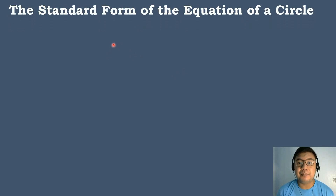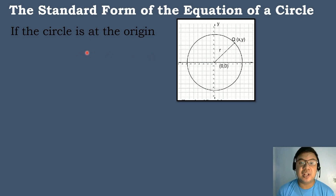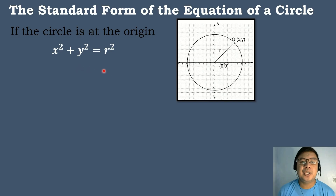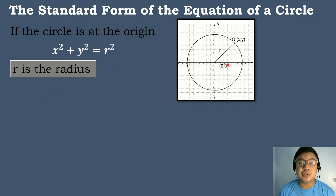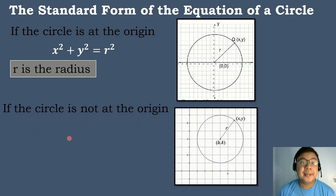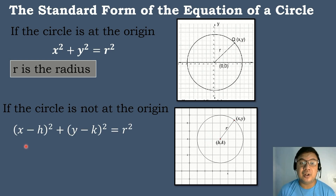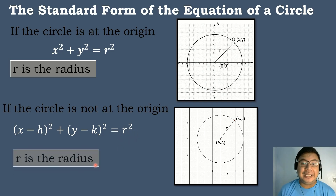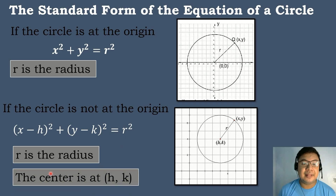We have two conditions to consider in finding the standard form of the equation of a circle. The first one is if the circle is at the origin, meaning the center is at coordinates (0, 0), then we use x squared plus y squared equals r squared, where r is the radius. The second condition is if the circle is not at the origin; we use the center-radius form: the quantity of (x minus h) squared plus (y minus k) squared equals r squared, where r is the radius and the center is at coordinates (h, k).